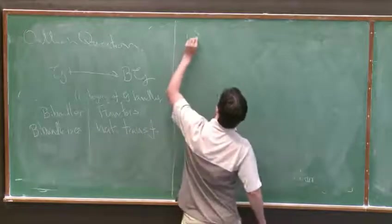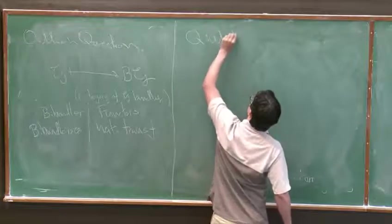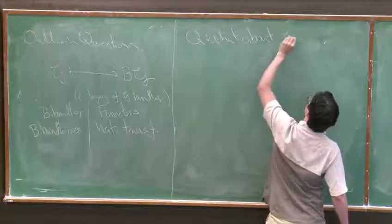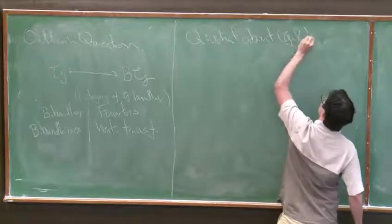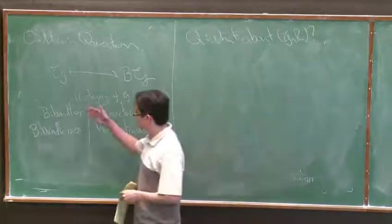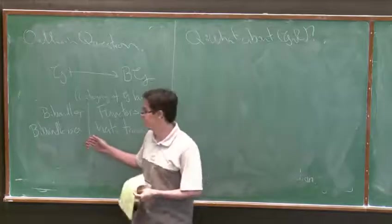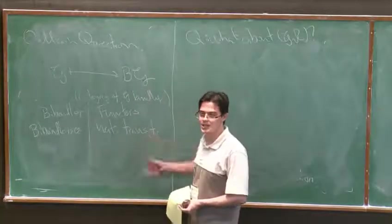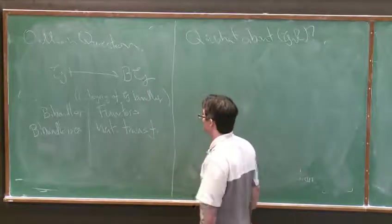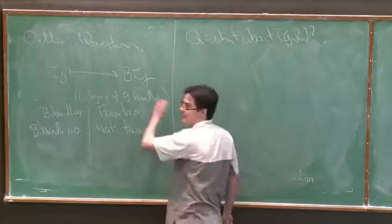So the question that I would like to ask is what about the symplectic case? So if you have a symplectic groupoid, then we have a notion of symplectic B-bundles. We have a notion of isomorphisms of symplectic B-bundles. And the question is, what's over here? So the most natural thing to think is it should introduce some sort of geometry on this stack.